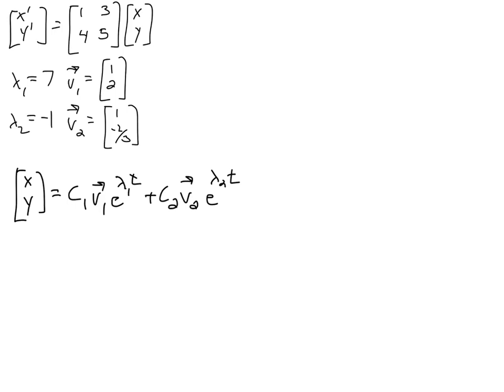So we've been thinking about this system that we have up here, and we found out that this matrix of coefficients has eigenvalues of 7 and -1. The eigenvalue 7 has an eigenvector (1, 2), and -1 has an eigenvector (1, -2/3).